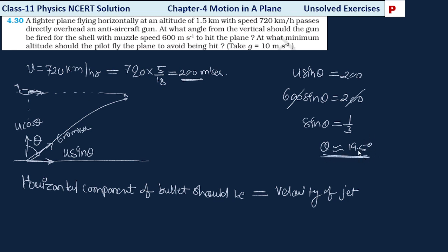We need to calculate this — it comes to about 19.5 degrees. So the bullet must be thrown at this angle, and it will go further upward. The question asks: what is the minimum altitude? Currently the plane is at 1.5 km, but it can move even higher. The minimum altitude is how high the plane must fly so the bullet cannot hit it — higher than the bullet's maximum height.